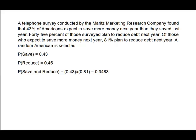So what I know now is that I've got two 'or' probabilities — they're either going to save or reduce — and I have one joint probability of save and reduce. So I can continue to work this problem using these formulas, or I can make the choice to build a matrix.